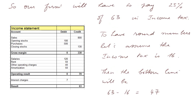Our firm will have to pay 25% of this 63, and that will be the income tax. To have round numbers, let's assume that the income tax is 16. So the bottom line will be 63 minus 16, that is 47. And that will be the real bottom line.